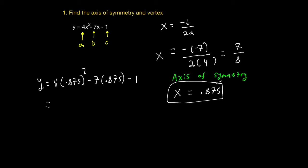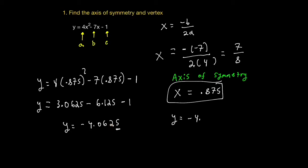Here I'll show you the steps. This part evaluates to 3.0625, and then we have minus 6.125 and minus 1. After that evaluation, you should get that y is equal to negative 4.0625. Rounding to 3 decimal places, the 5 causes my 2 to round up to a 3, so y is equal to approximately negative 4.063. So the vertex is x approximately 0.875 — that's also the axis of symmetry — together with negative 4.063.